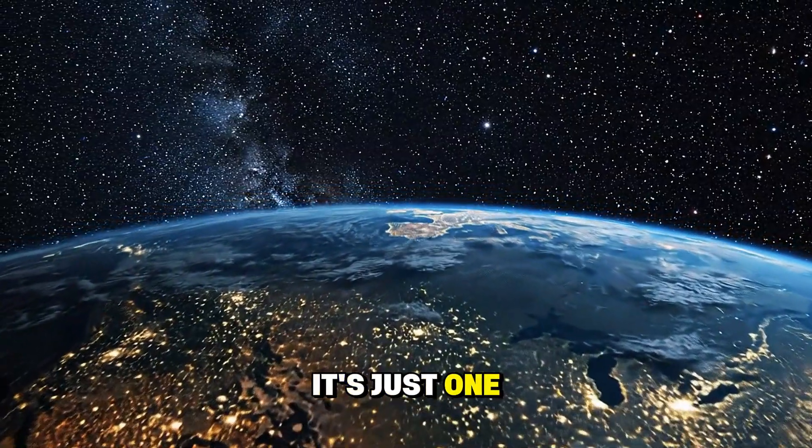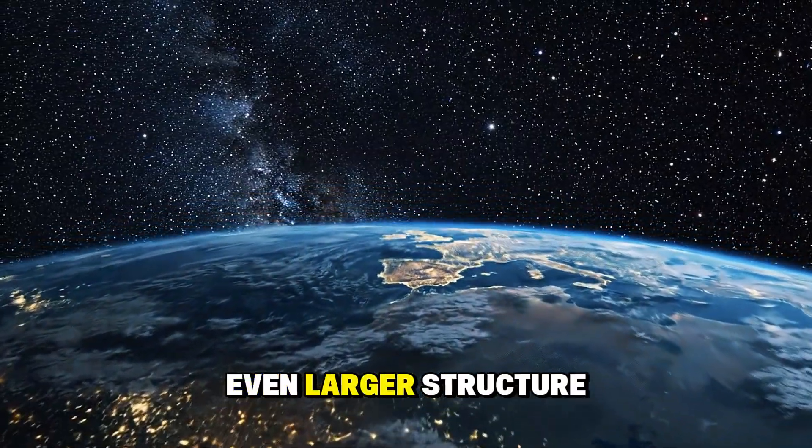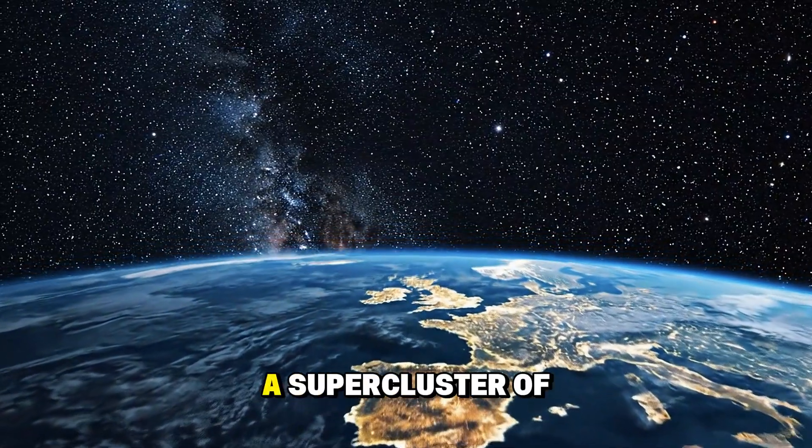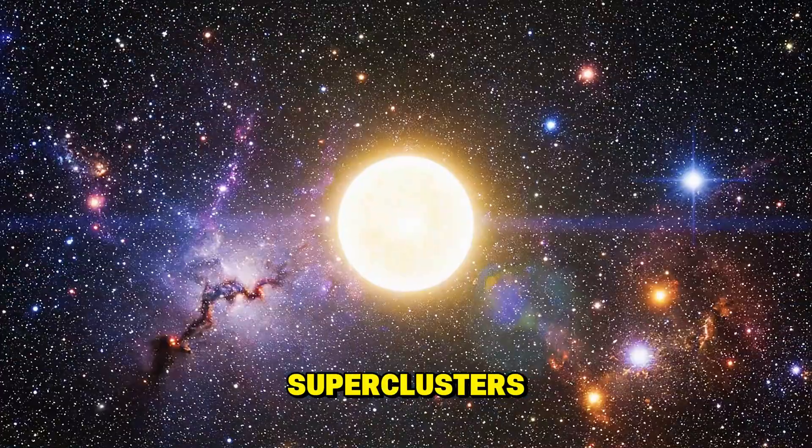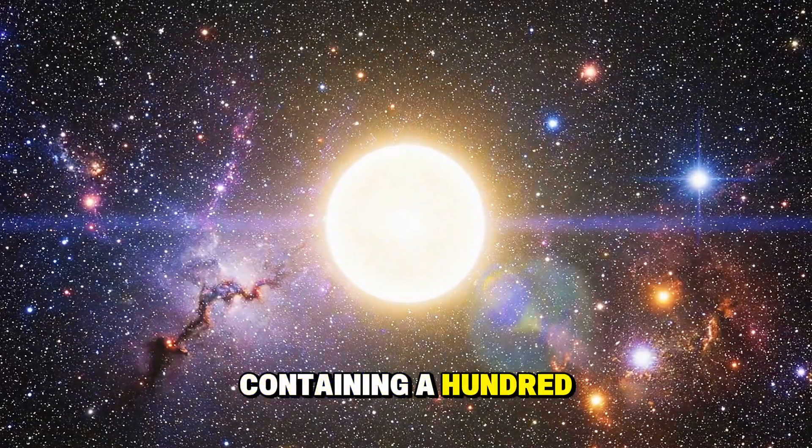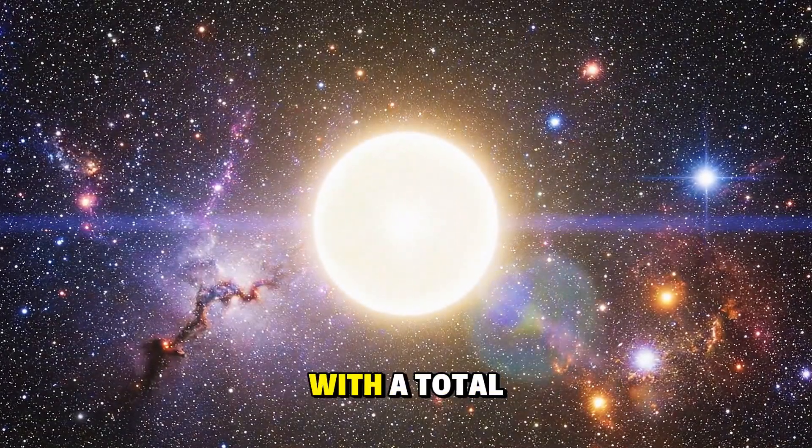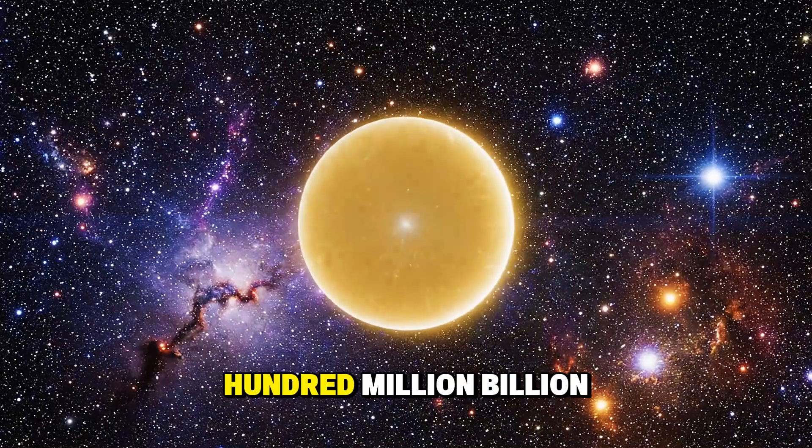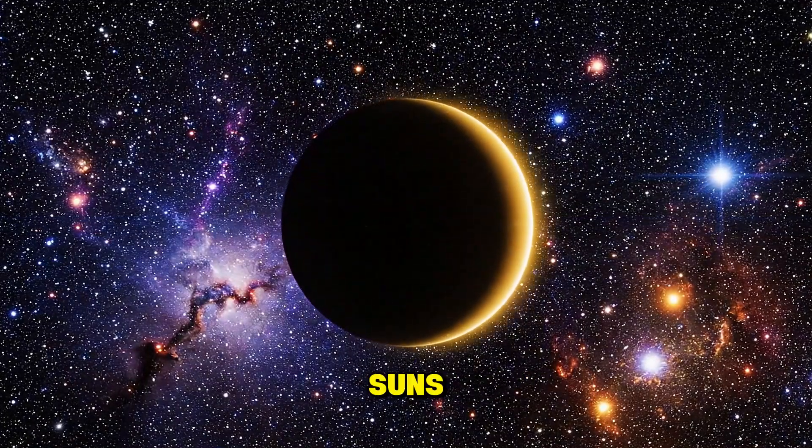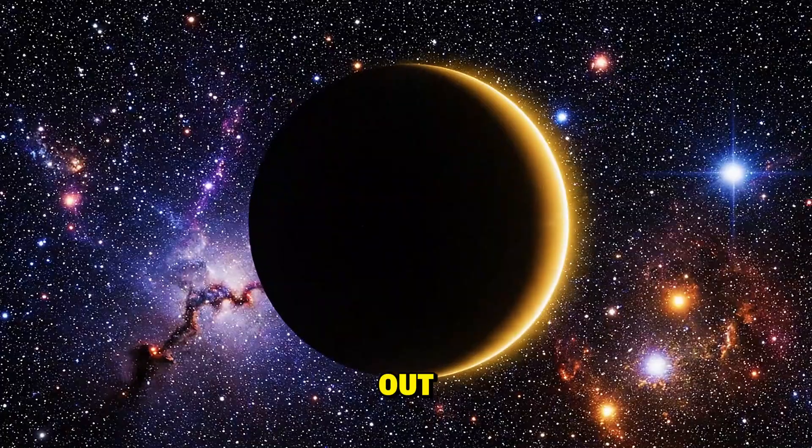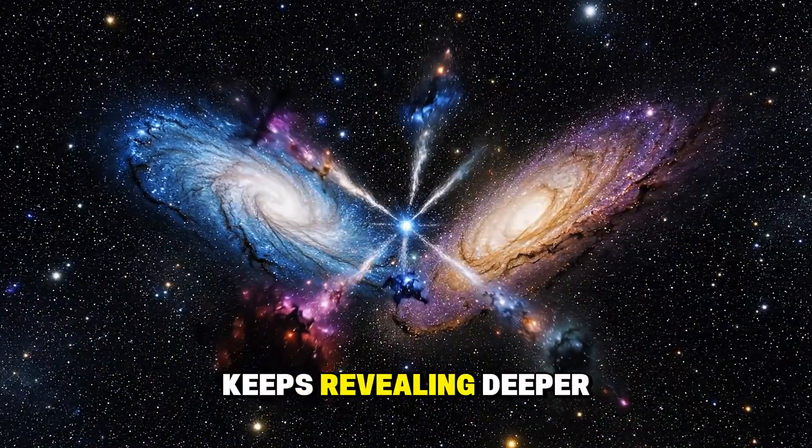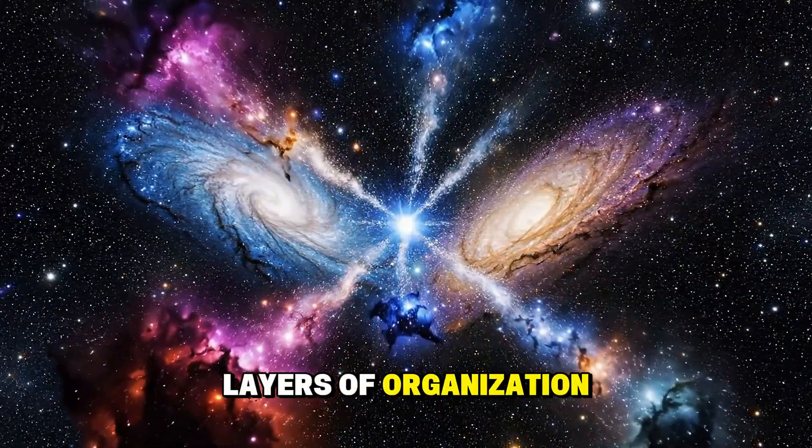And the Virgo supercluster? It's just one node in an even larger structure called Laniakea, a supercluster of superclusters, containing 100,000 galaxies with a total mass of 100 million billion suns. We keep zooming out and the universe keeps revealing deeper layers of organization.